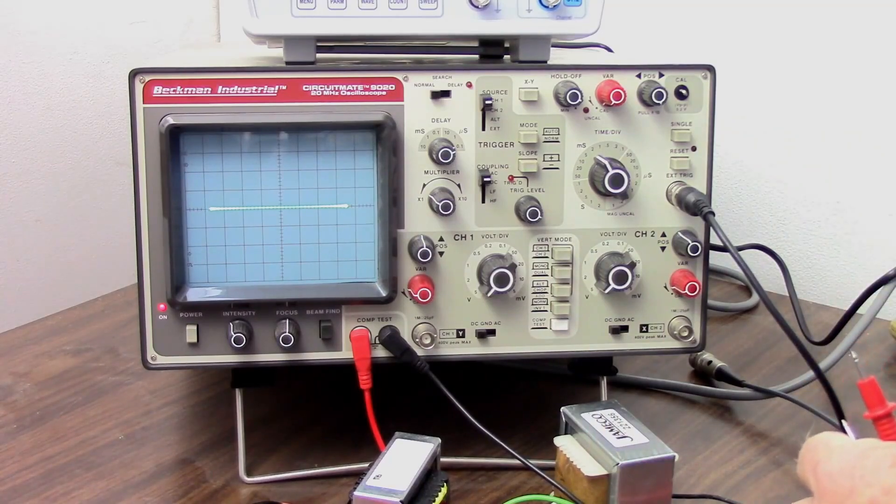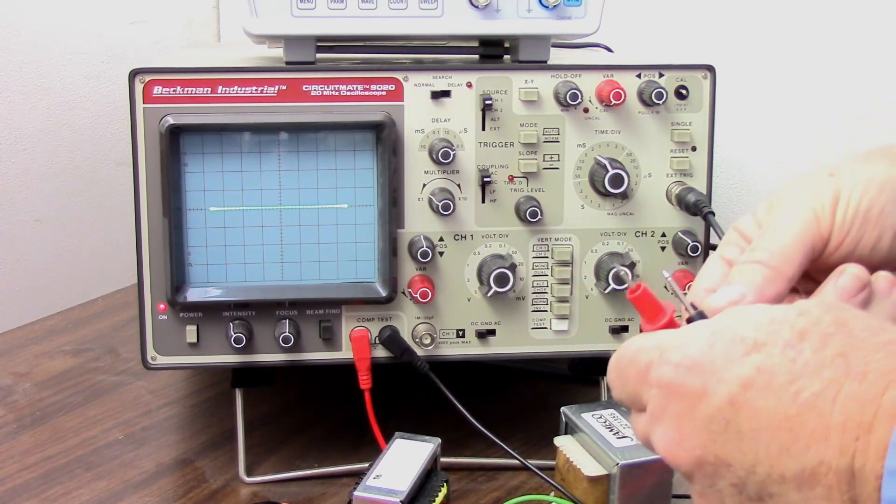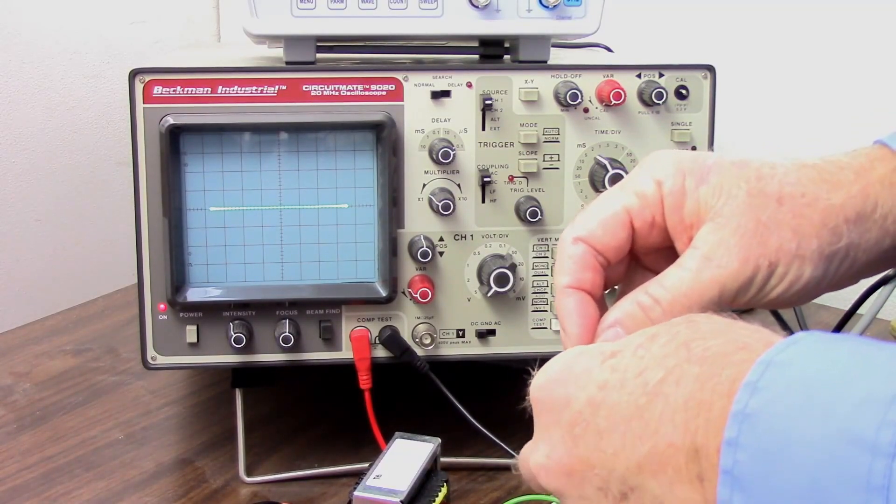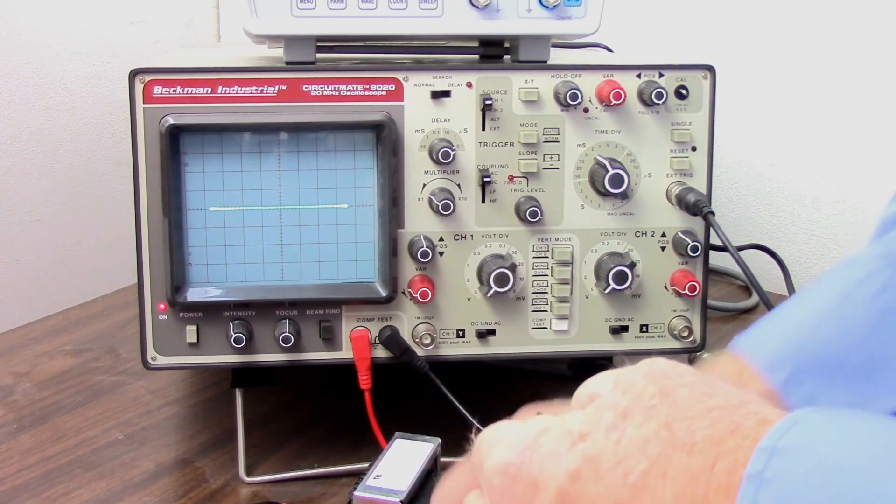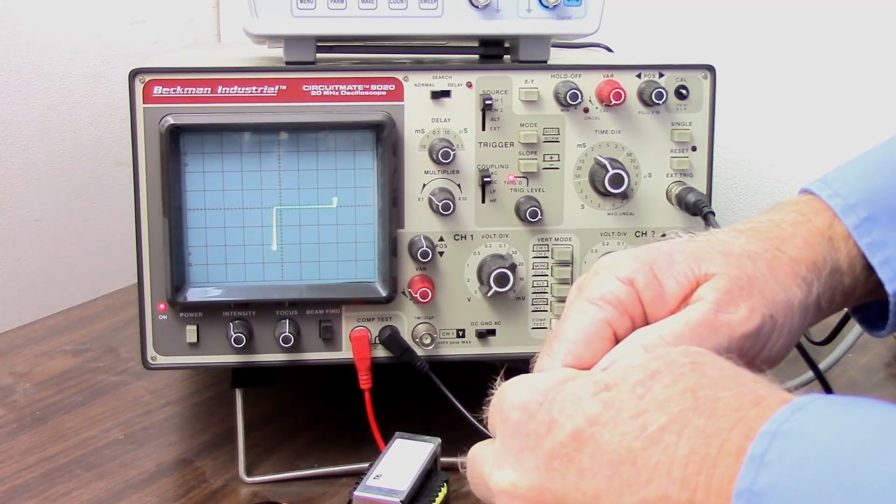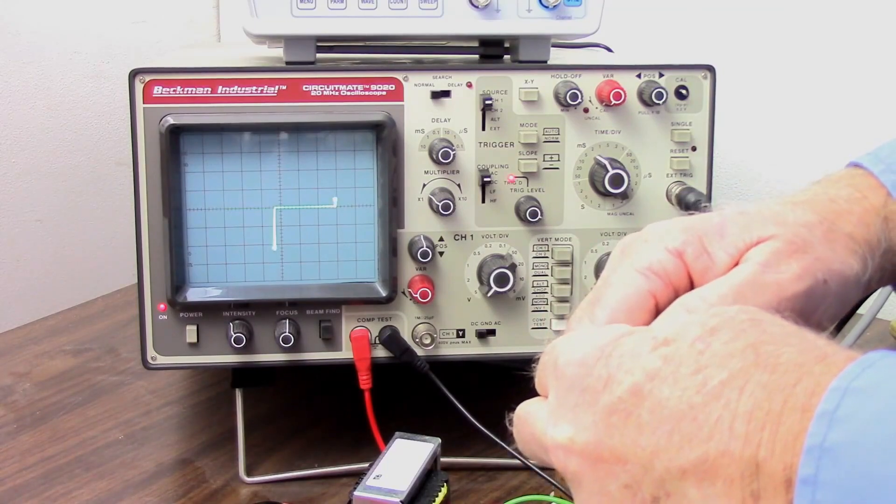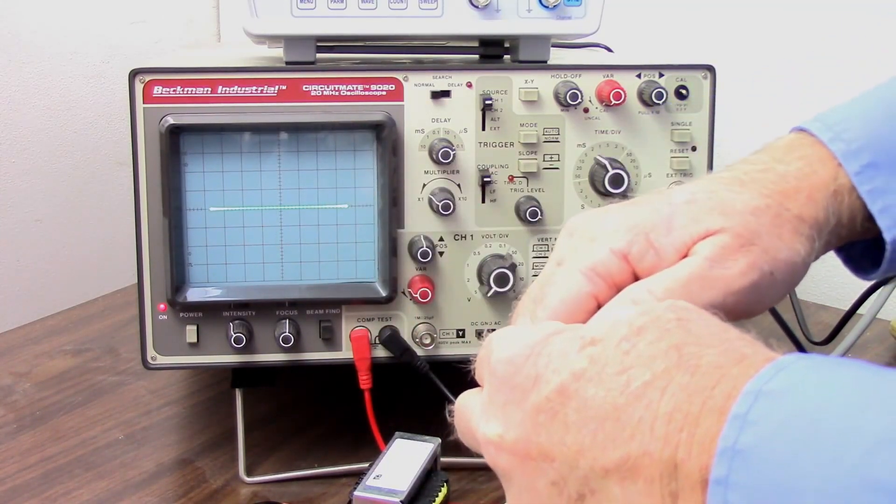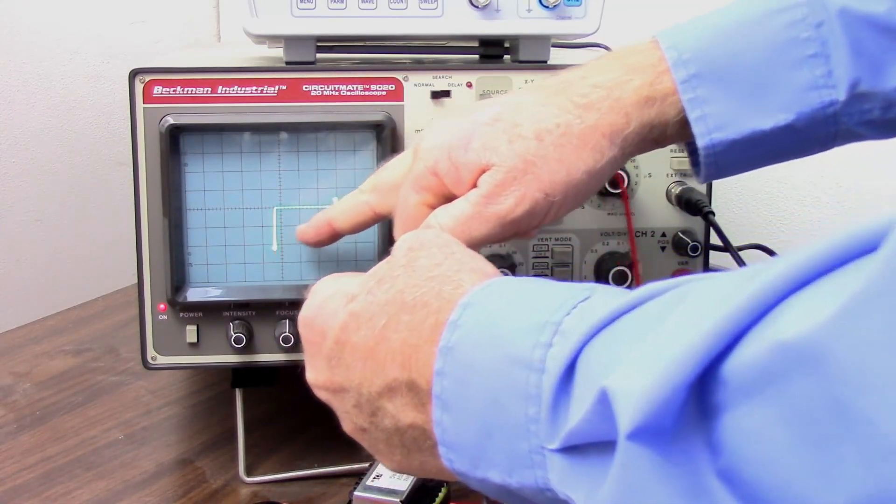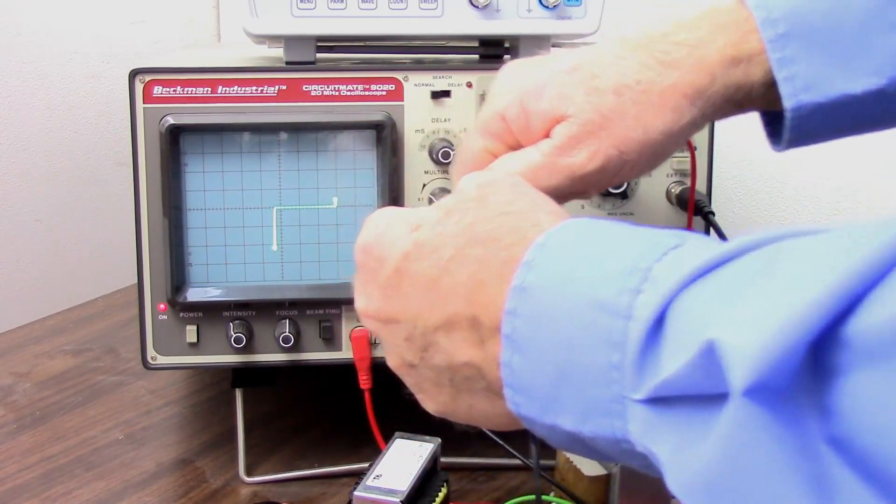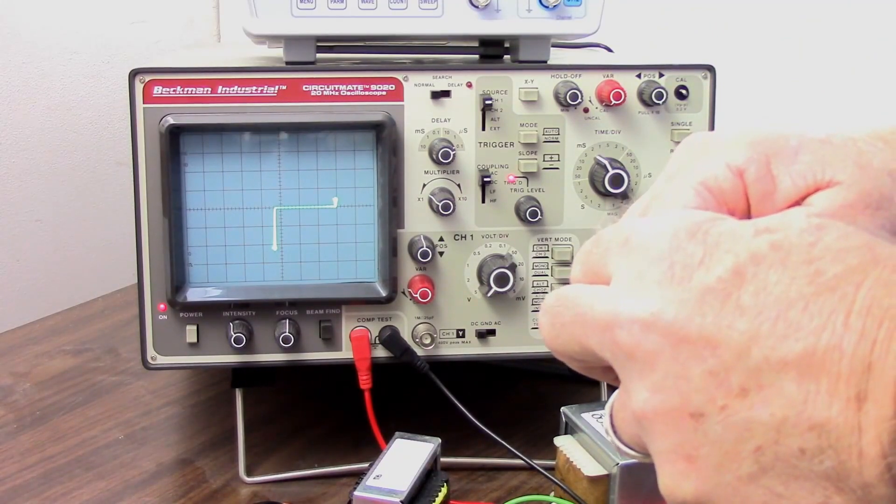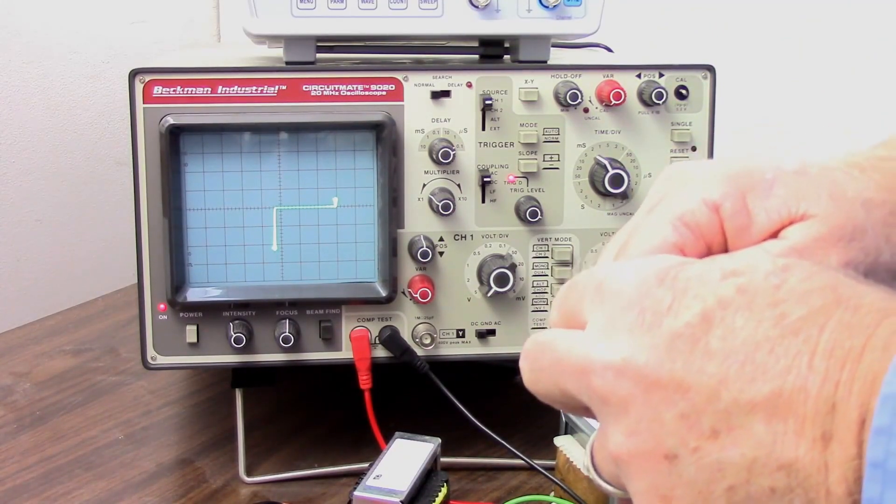Now let's do that with a transistor. I have a little 2N2222 here. Let's hook up one lead to the base and one lead to the emitter. And look at that. Now that looks like a Zener diode. We have our forward bias here. But look, reverse biased, we have a breakdown voltage, just like a Zener diode. Well, most transistor base-to-emitter junctions act like a Zener diode. So that's perfectly normal.